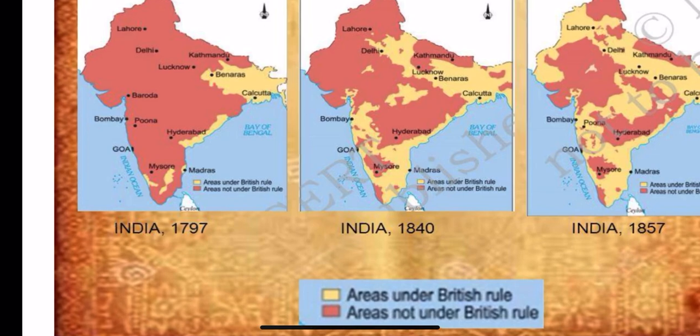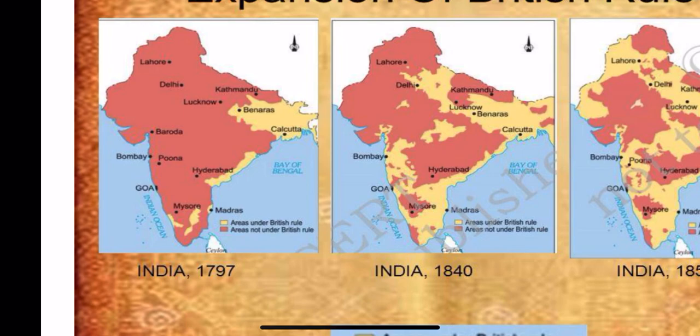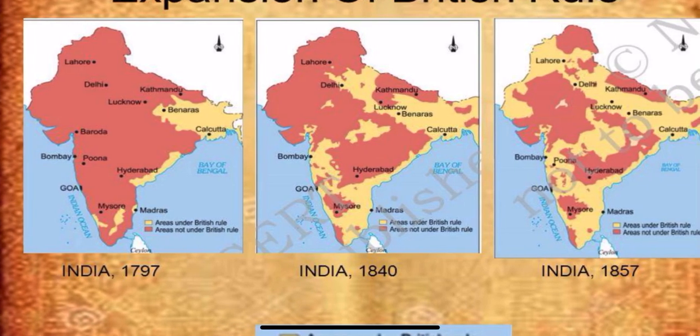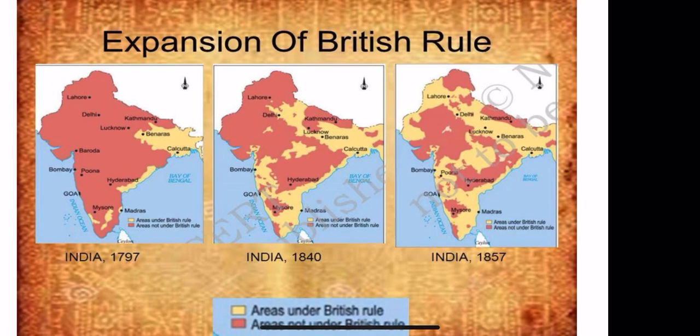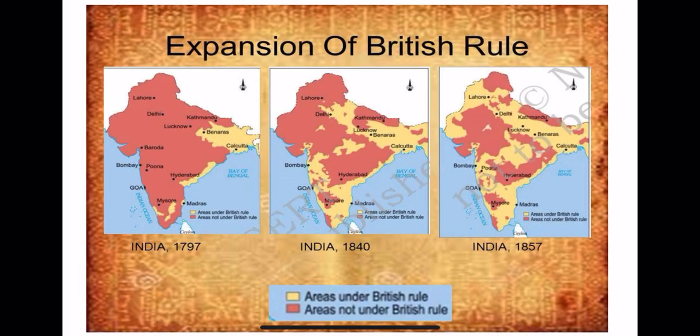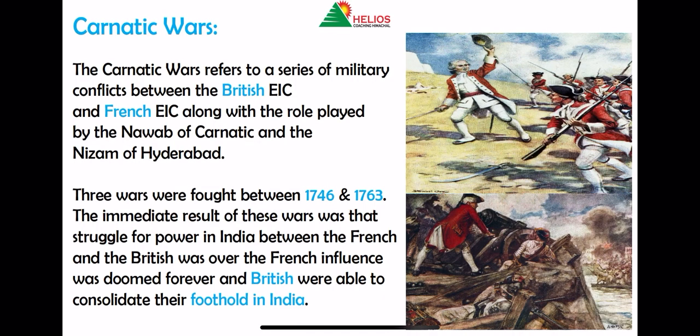Next, looking at the expansion of British rule — in 1797, only Calcutta, Benaras, and some part below Hyderabad near Mysore were under British control. After approximately 50 years, in 1840, you can see maximum annexations happening from 1757 to 1857 — a large area shown in yellow is now under British rule. Finally in 1857, up till Lahore, Madras, Bombay, Calcutta, Benaras, Lucknow, Kathmandu and Delhi — every area is under the British Empire. Please download this map; it can be very important.